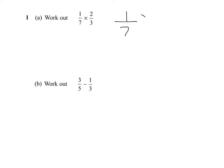So what you should know here is you do one times the two and seven times the three, which gives me two over twenty-one. So you multiply the top and the bottom separately and that gives you the answer.